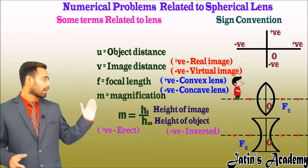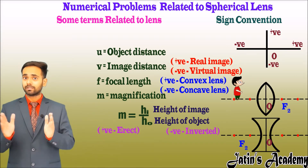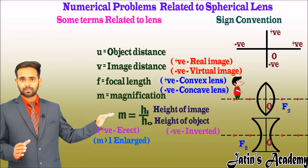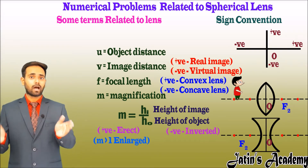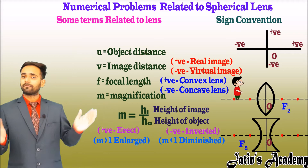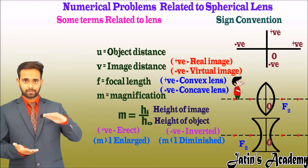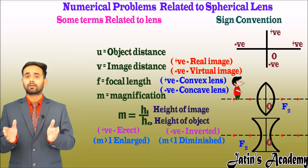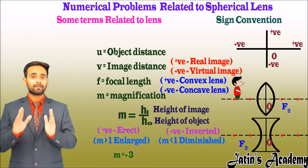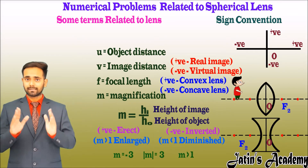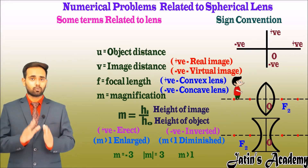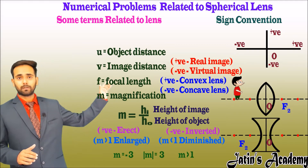Magnification m equals h_i upon h_naught. If the height of the image is greater than the height of the object, magnification is greater than 1 and the image is enlarged. If less than 1, the image is diminished. Note: magnitude is important — if magnification is minus 3, its magnitude is 3 (greater than 1), so the image is enlarged. The negative sign only indicates the image is formed below the principal axis.